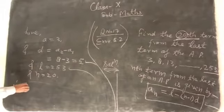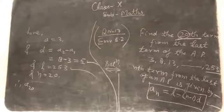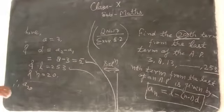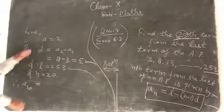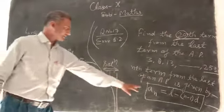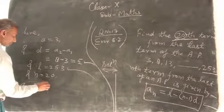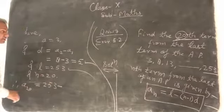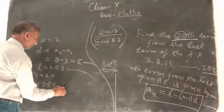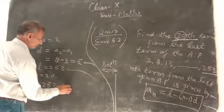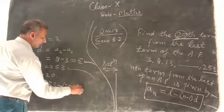Therefore, A20 from the 20th term from last. Put all these values in this formula, so here we get L from 253 minus, and n comes 20, minus 1 into d.